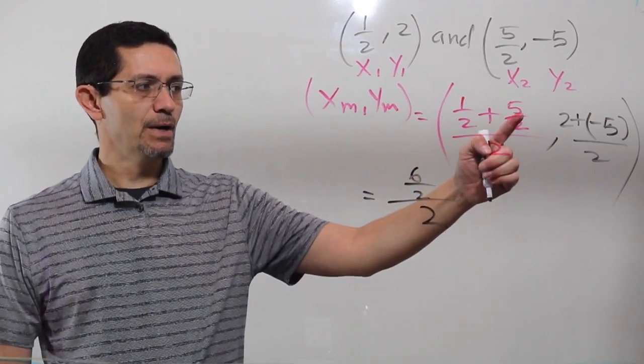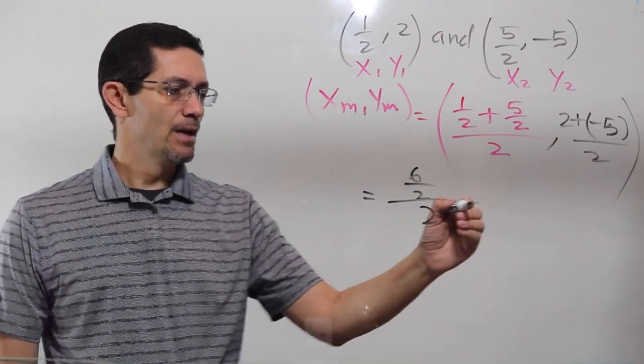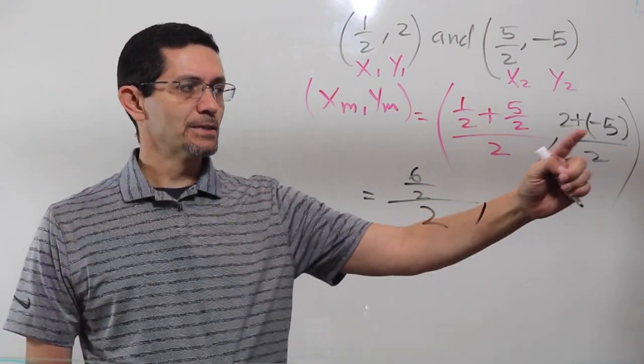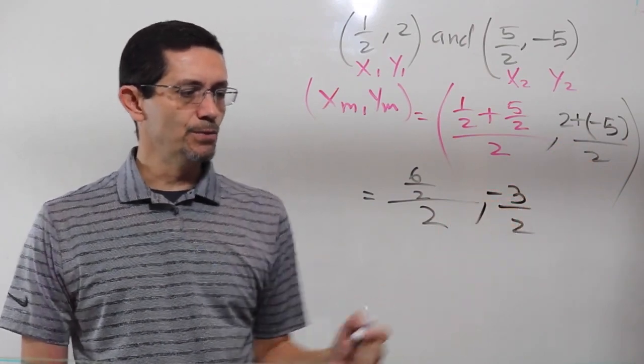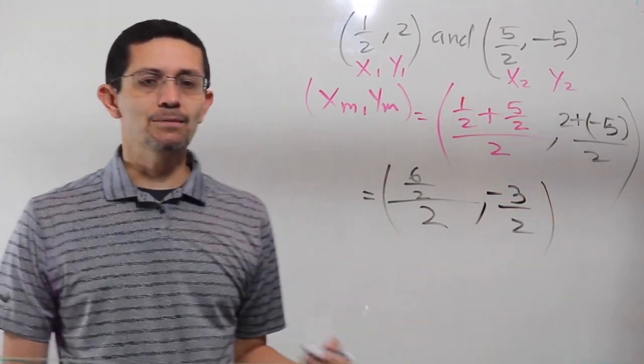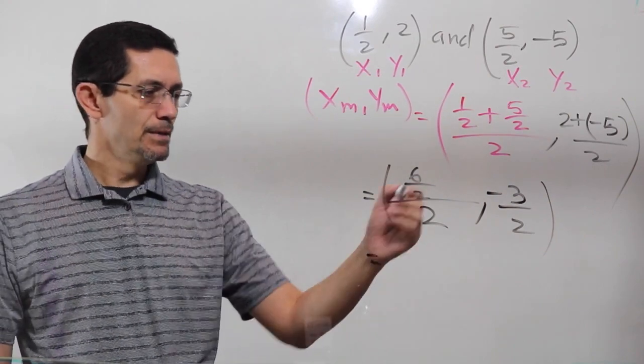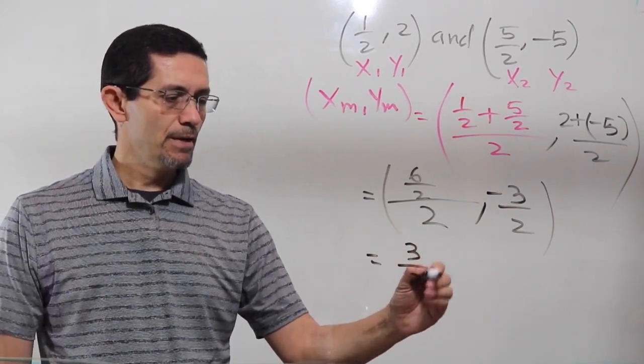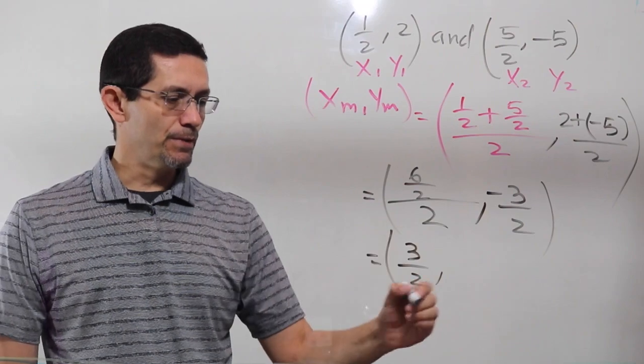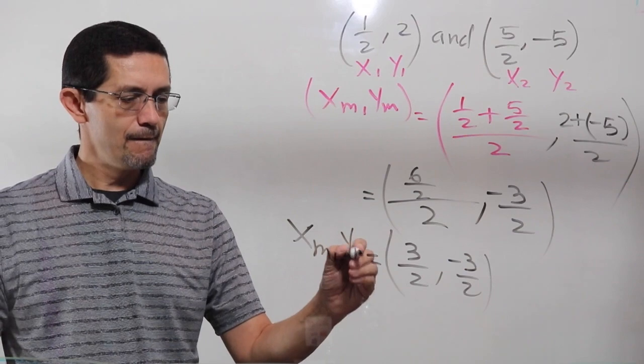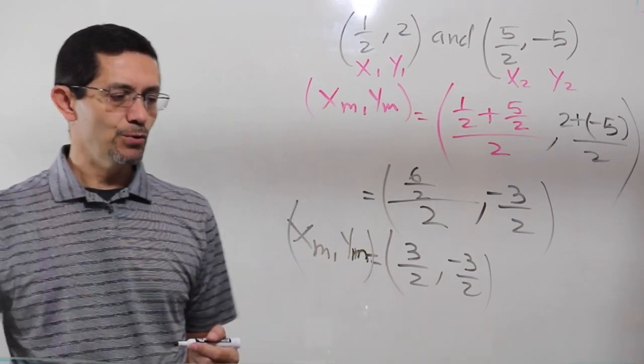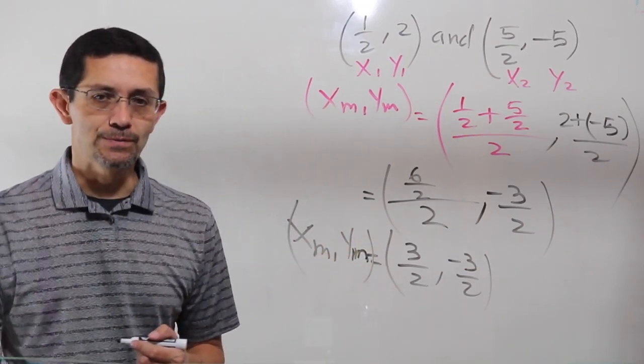1 plus 5 is 6 divided by 2 over 2. So, 1 half plus 5 over 2 is the same as 6 over 2. Comma. 2 plus negative 5. Positive negative becomes negative. So, 2 minus 5 is negative 3 over 2. And from here, I simplify and reduce. 6 divided by 2 is 3. And there's nothing to simplify here. So, my midpoint is going to be 3 halves, comma, negative 3 over 2.